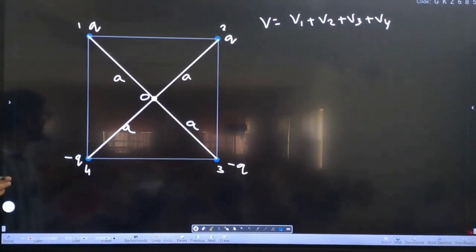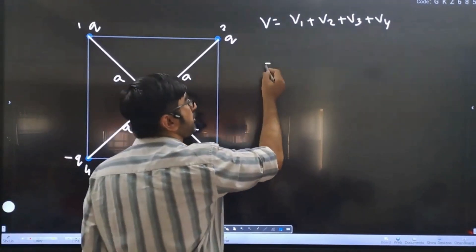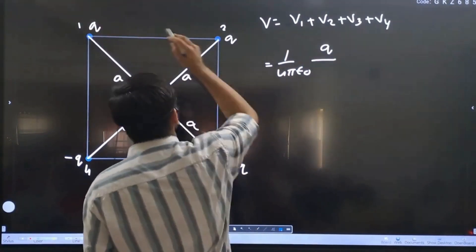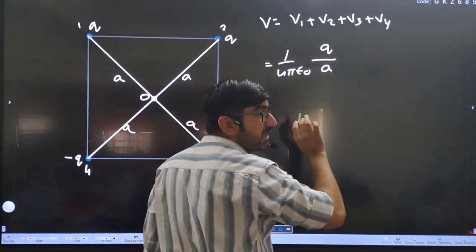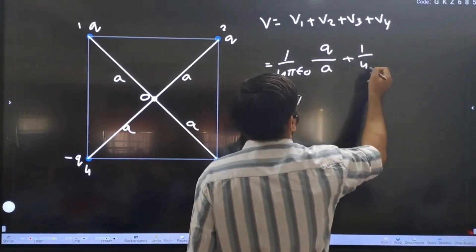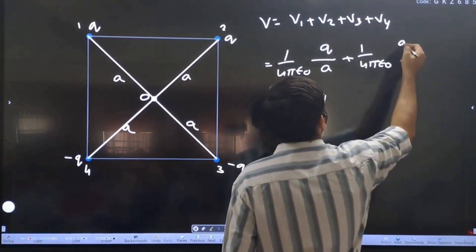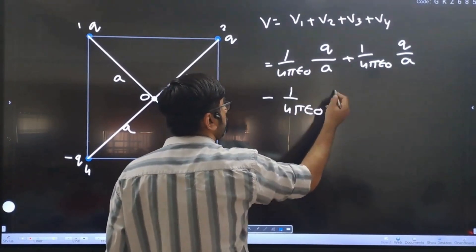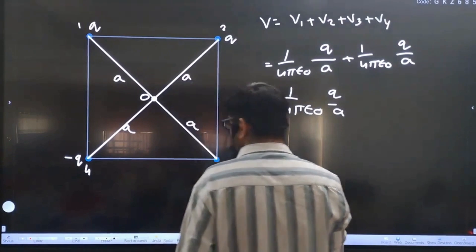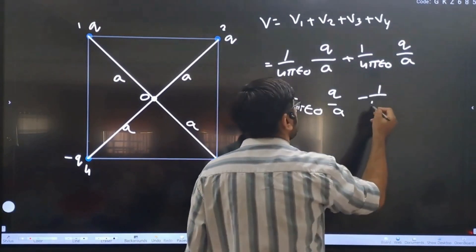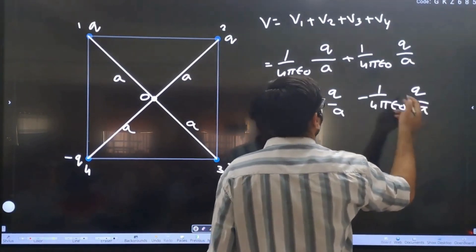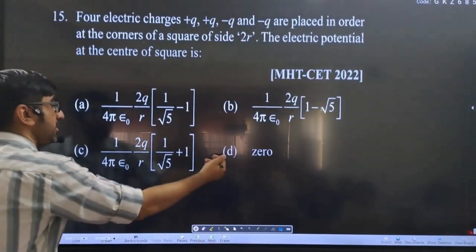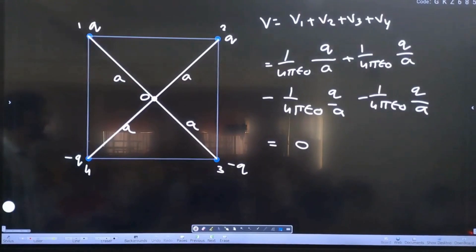So we have 1/(4πε₀) q/a minus - for equal charges - minus 1/(4πε₀) q/a. Two plus terms, two minus terms. Zero potential, zero potential energy.